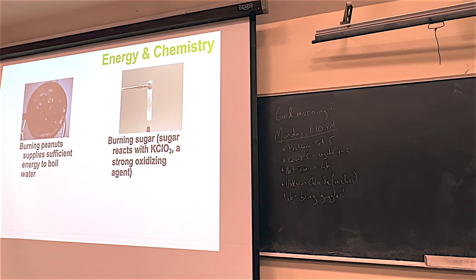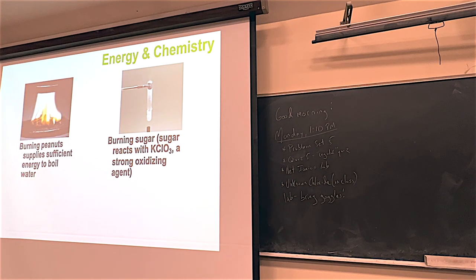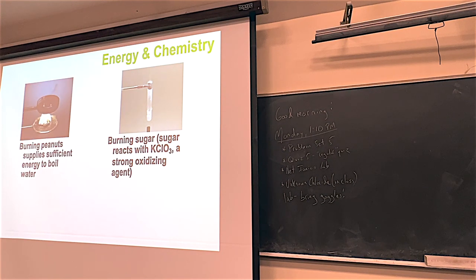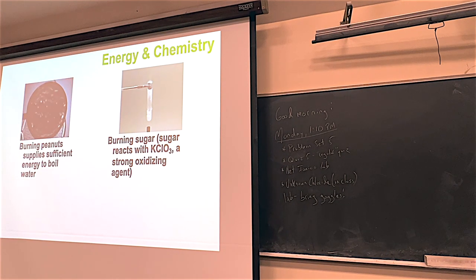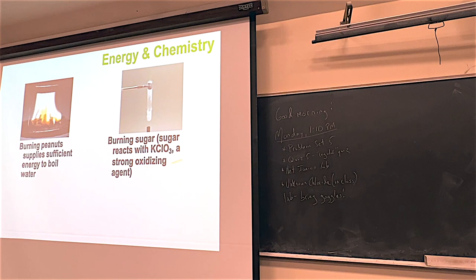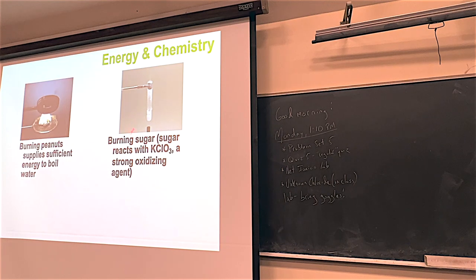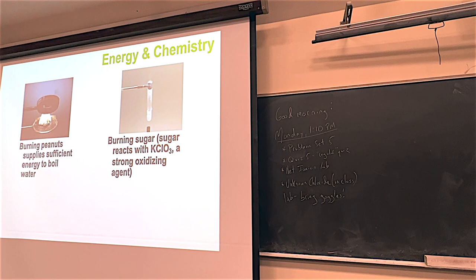When my son was young, he ate a whole bunch of gummy bears and was running around the house with all this sugar energy, then crashed. When you eat food - not just gummy bears - you get energy out. Potassium chlorate is what we used in the KClO₃ lab a couple weeks ago. It's great at turning the sugar in the gummy bear into energy, and there's a purple color that comes from the potassium.